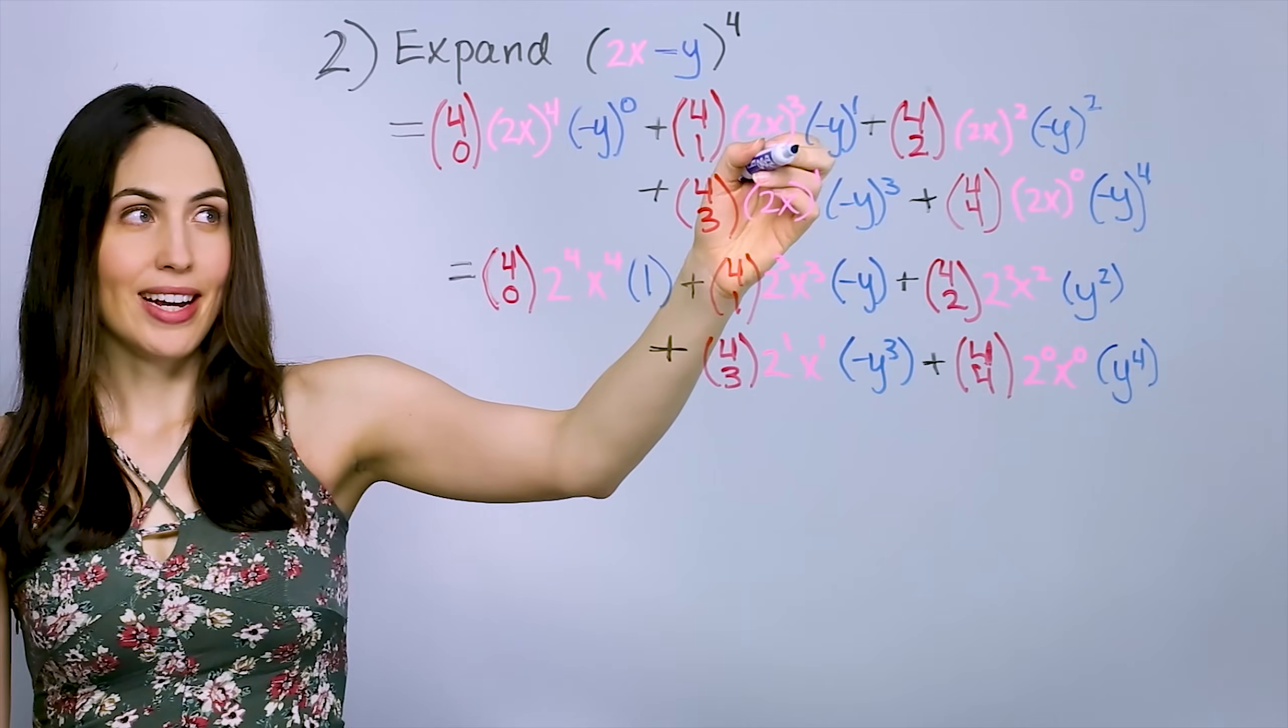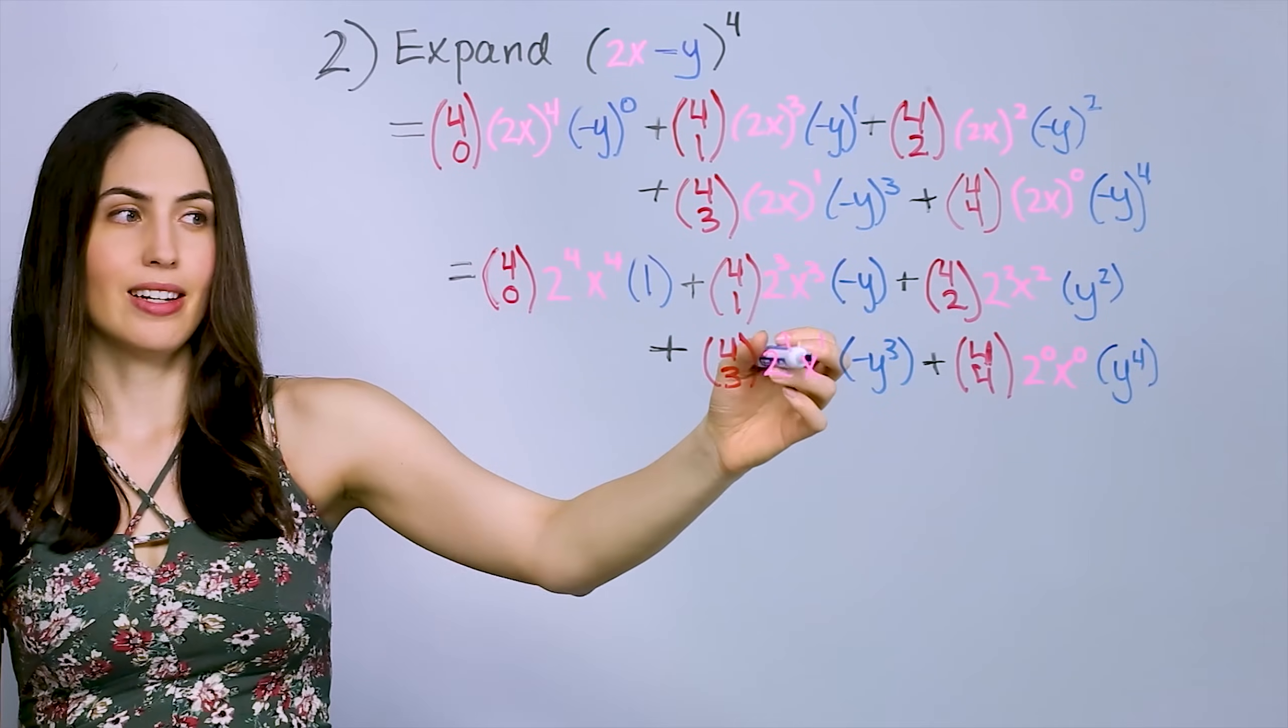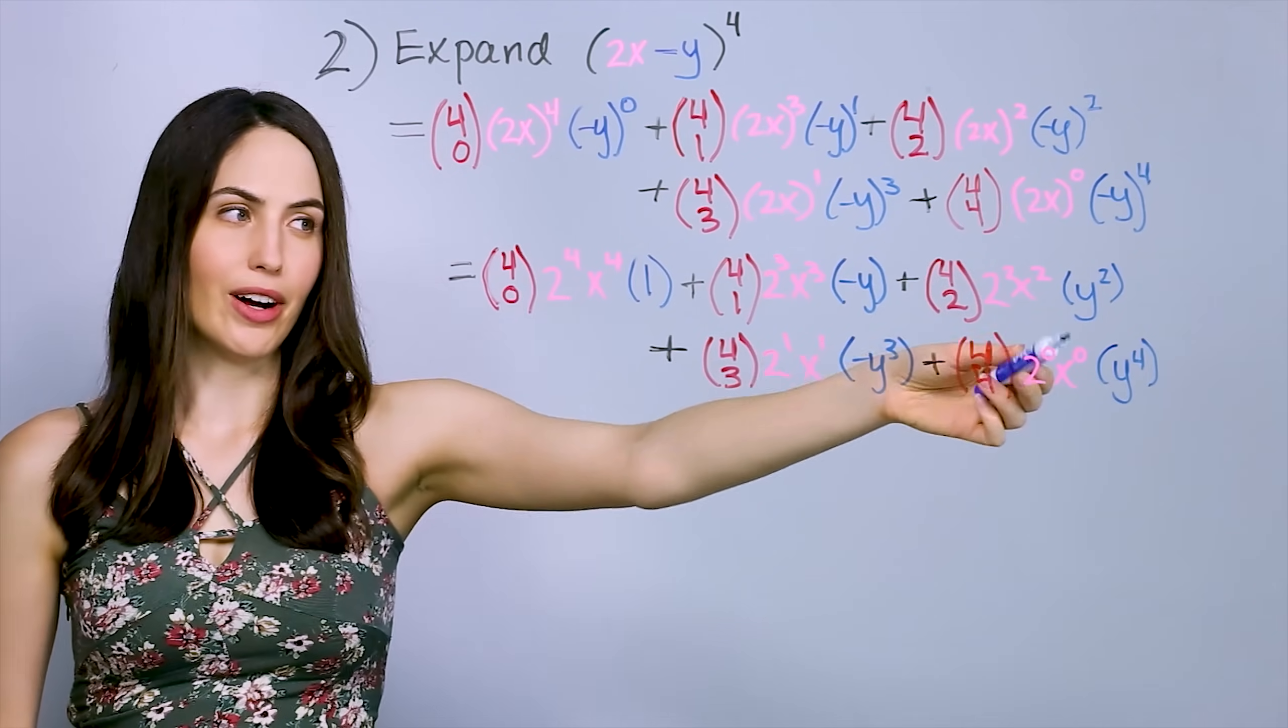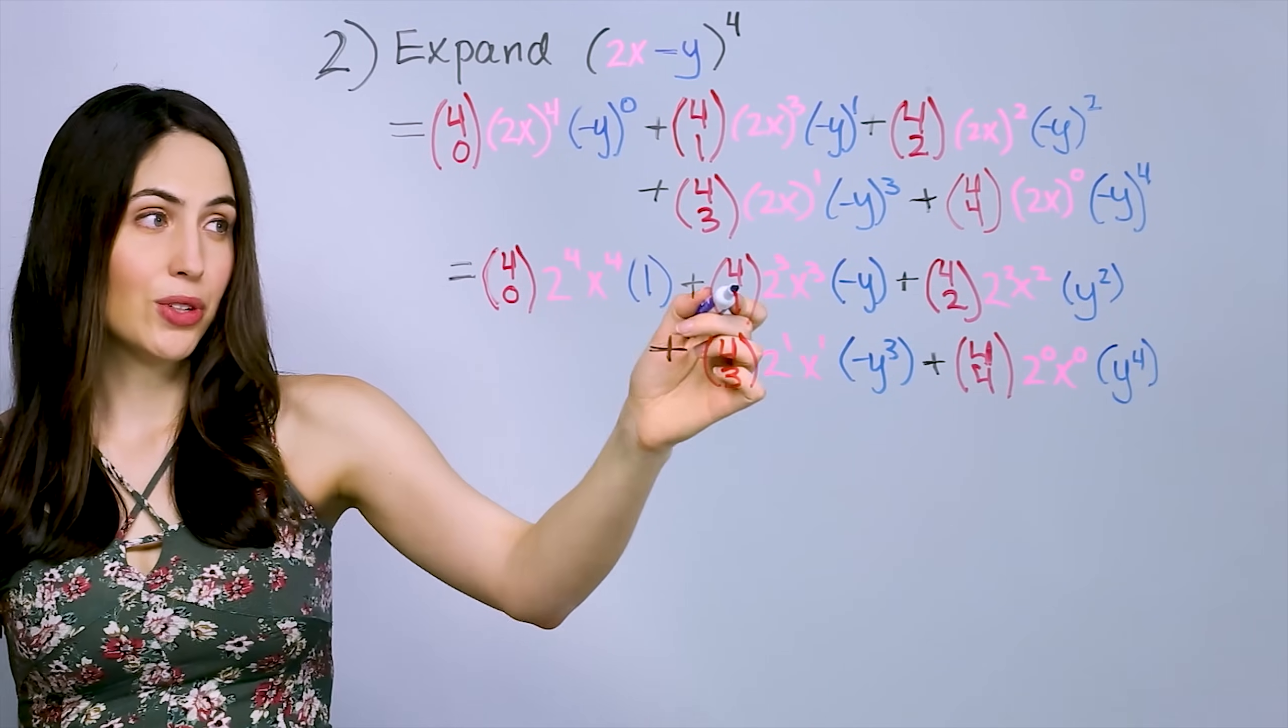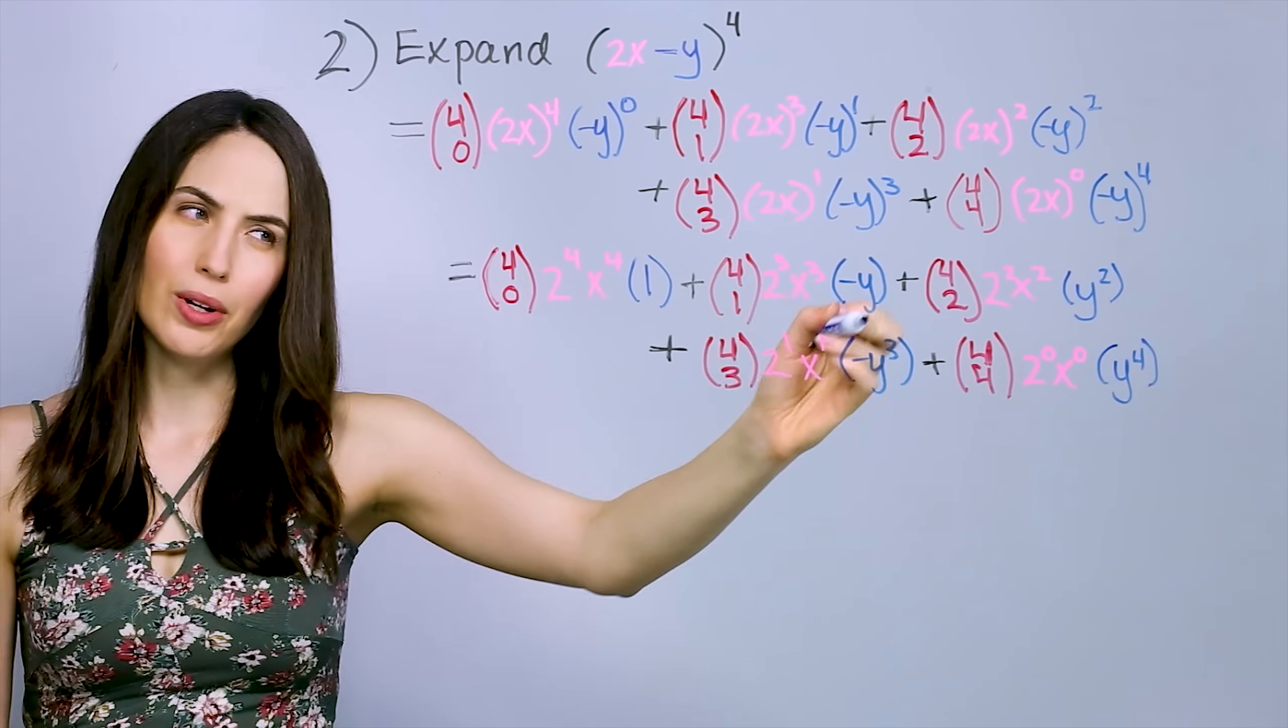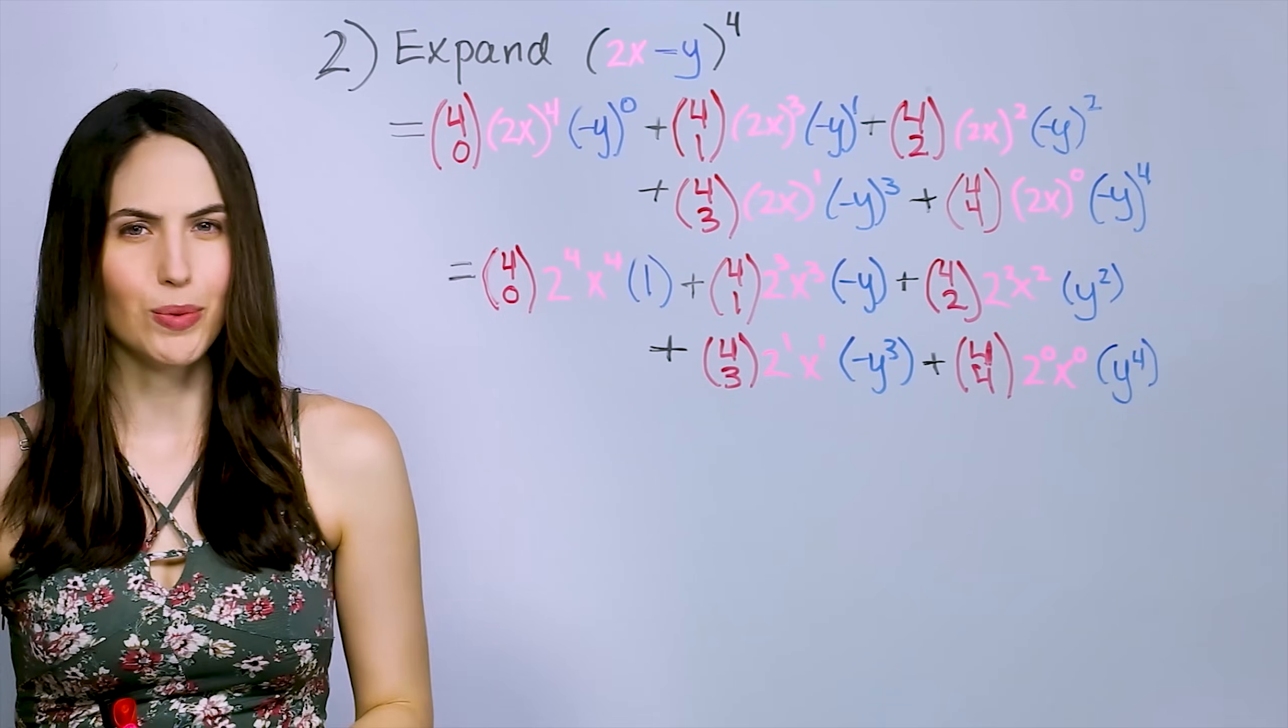So negative y's to the odd powers became negative overall. So negative y to the 1st power is still negative y. Negative y to the 3rd power is overall negative y cubed. And then these 2 became positive overall. So now we can just write what those powers of 2 actually are, 16, 8, etc. And any negative you have, you can pull to the front of the term. And adding that negative basically becomes subtraction of the whole term, so we can just write it that way.